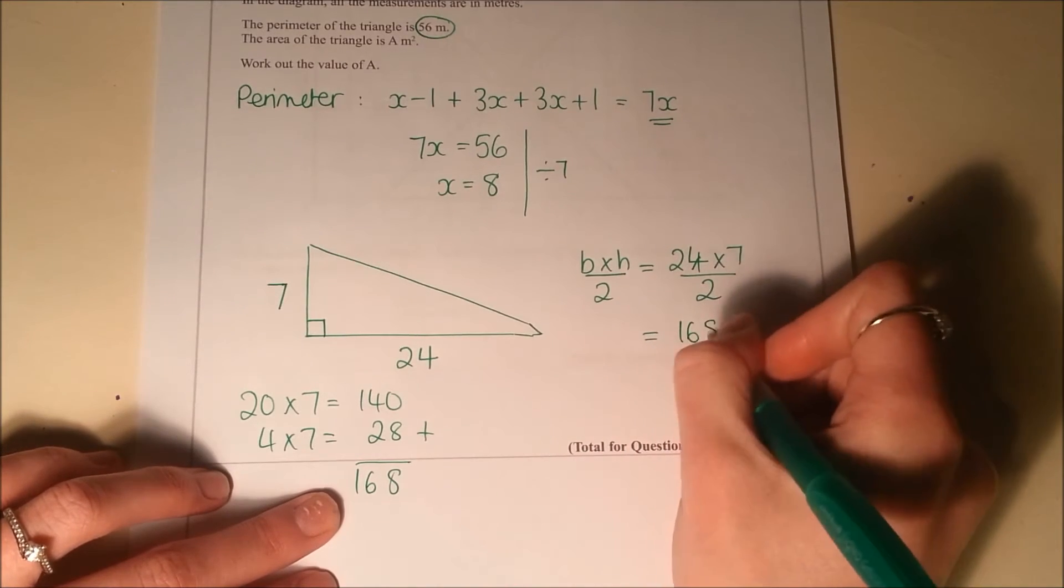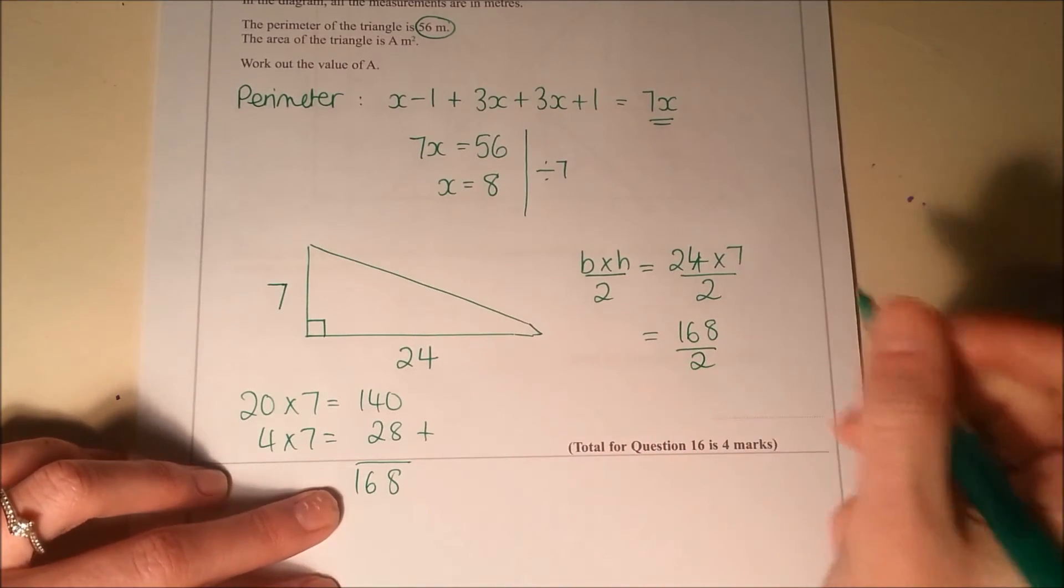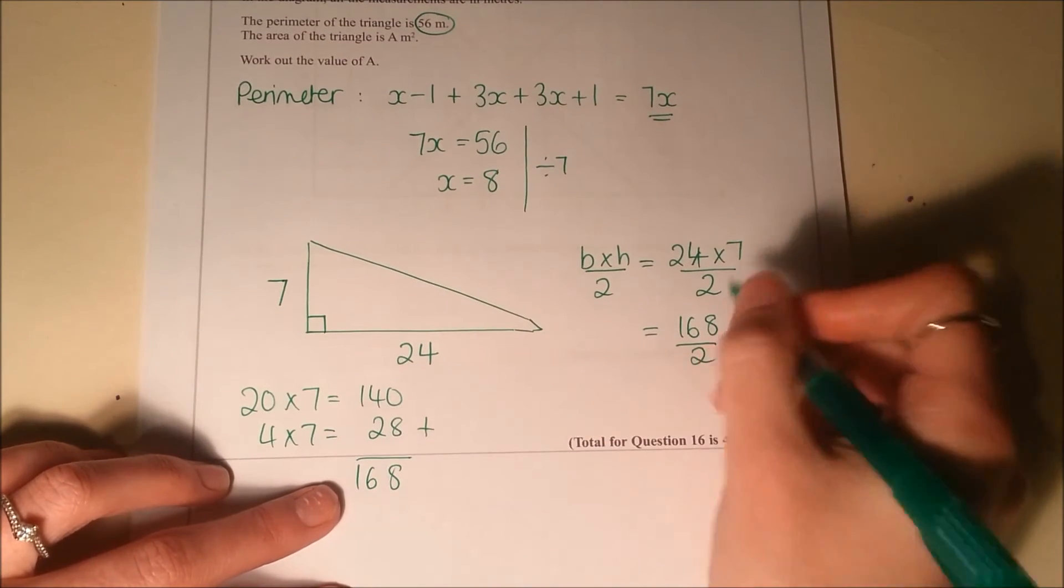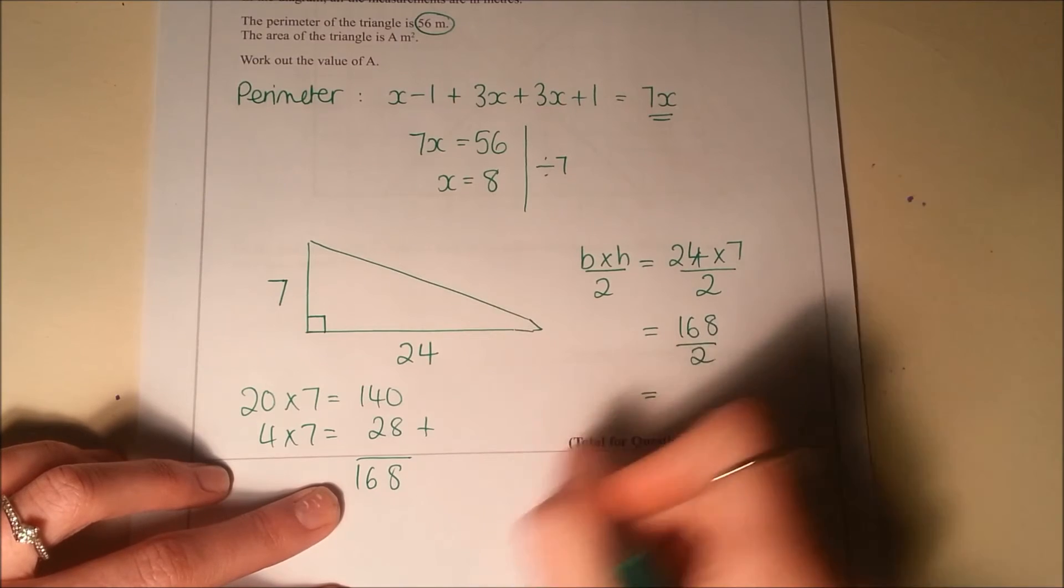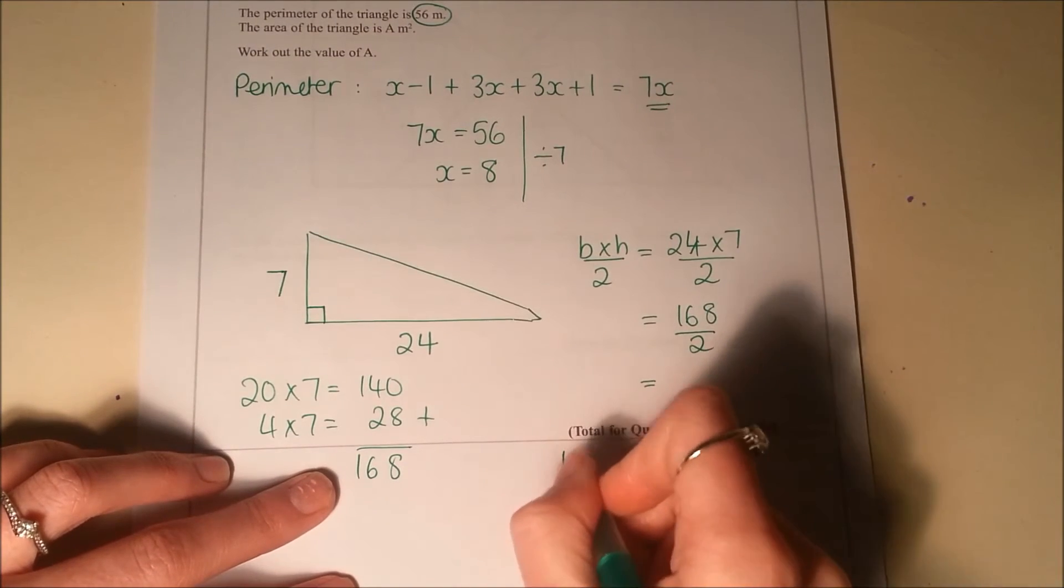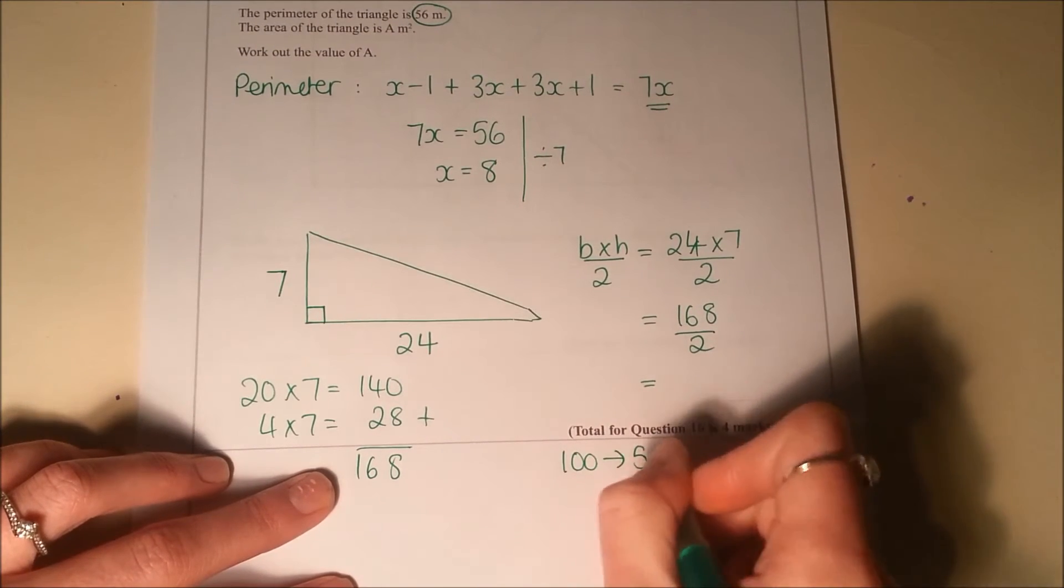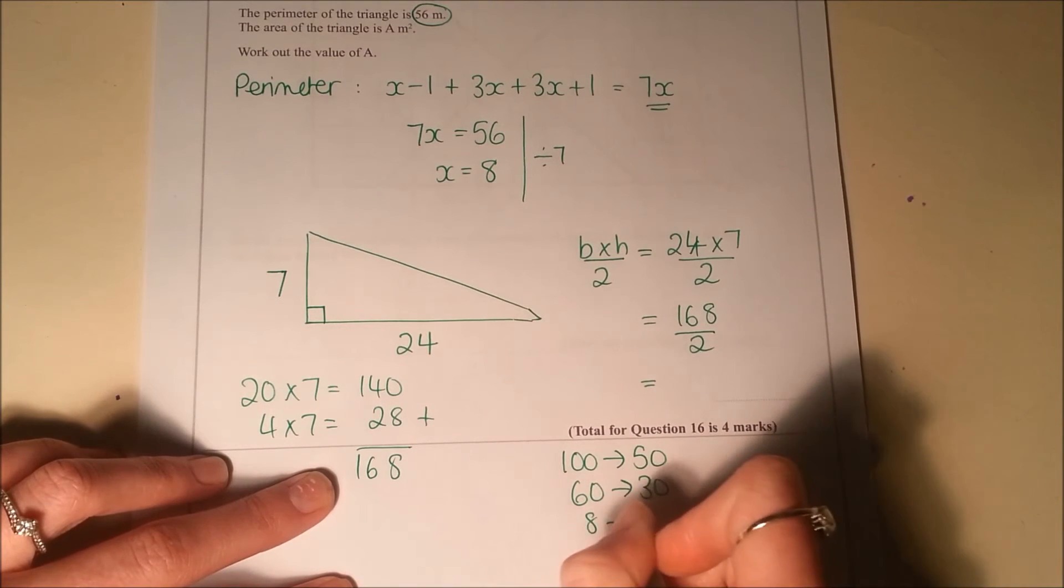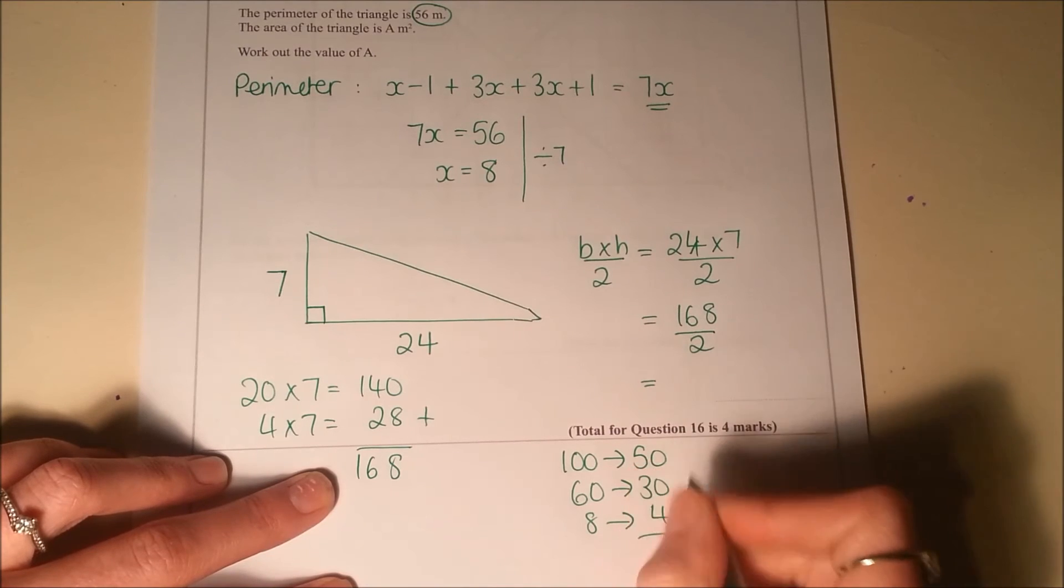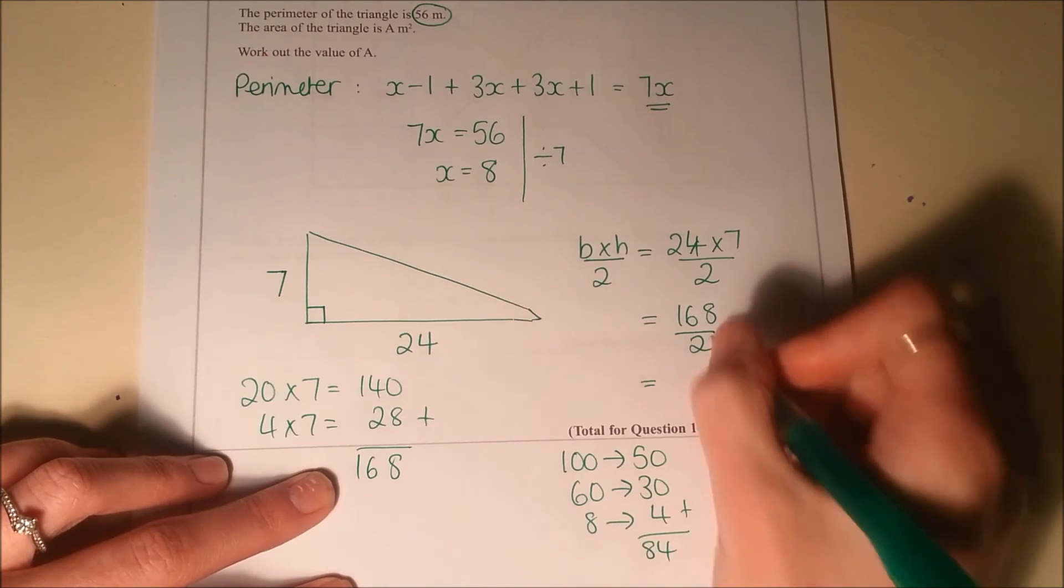So I'm going to be doing 168 divided by 2. So that's going to be, well, half of 100 is 50, half of 60 is 30, and half of 8 is 4. Add those together and I'm going to get 84.